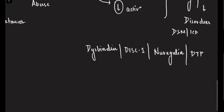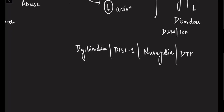For the exam, what you need in rote memory are the chromosome numbers. For example, neuregulin is on chromosome 8, and the COMT gene is on chromosome 22.